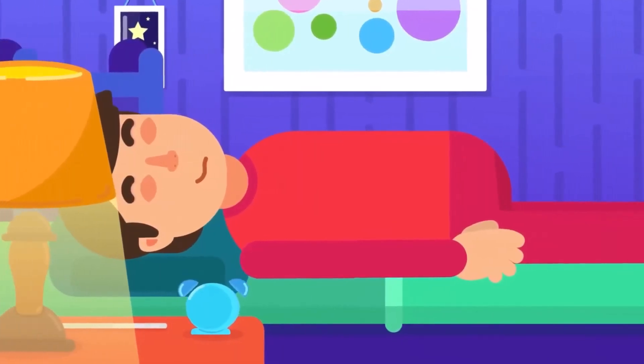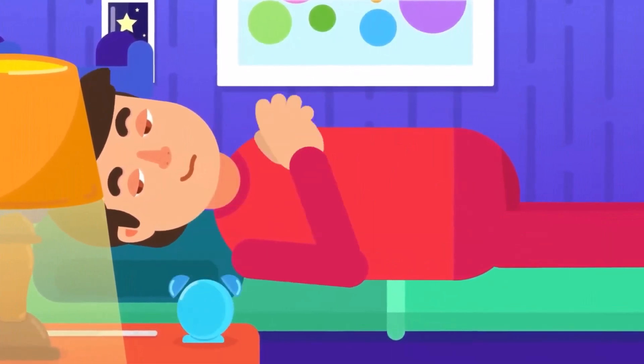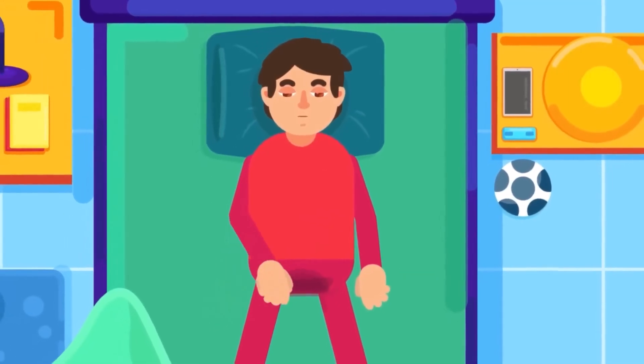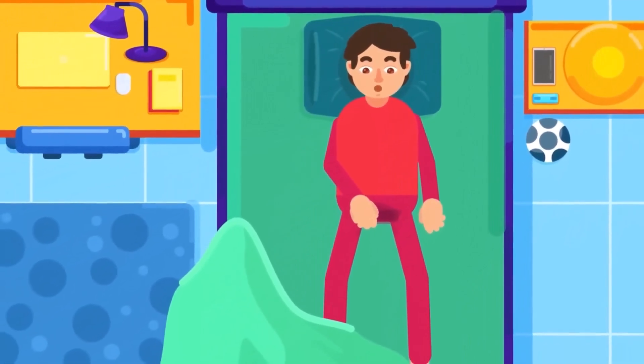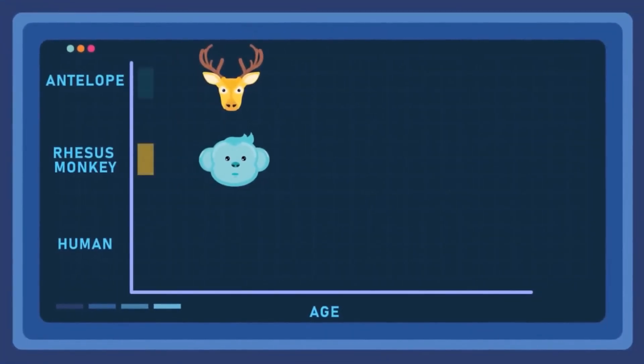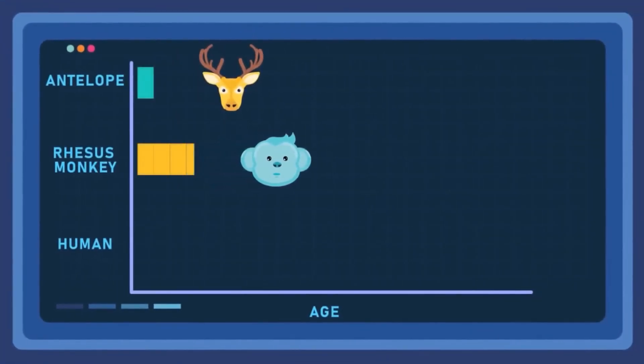Puberty. Puberty is the stage in the development of humans and other mammals when the sex organs mature and produce gametes for the first time. In humans, puberty takes place later in life, as compared to other mammals.